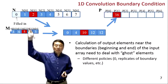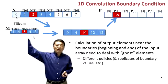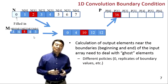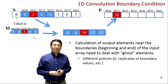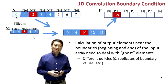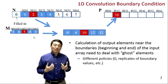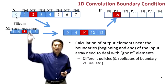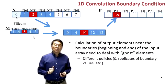Another valid policy is to assume all non-existing elements take the same value as the nearest boundary element, such as p0. Depending on the application, different policies can be used for determining ghost element values. In our labs, we'll assume all non-existing elements have value zero.